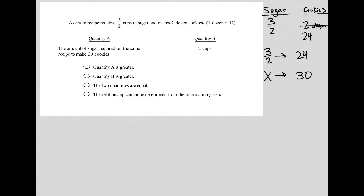The relationship I'm going to make is three halves to 24 as a ratio should be equal to X, this unknown amount of sugar, to 30 cookies.